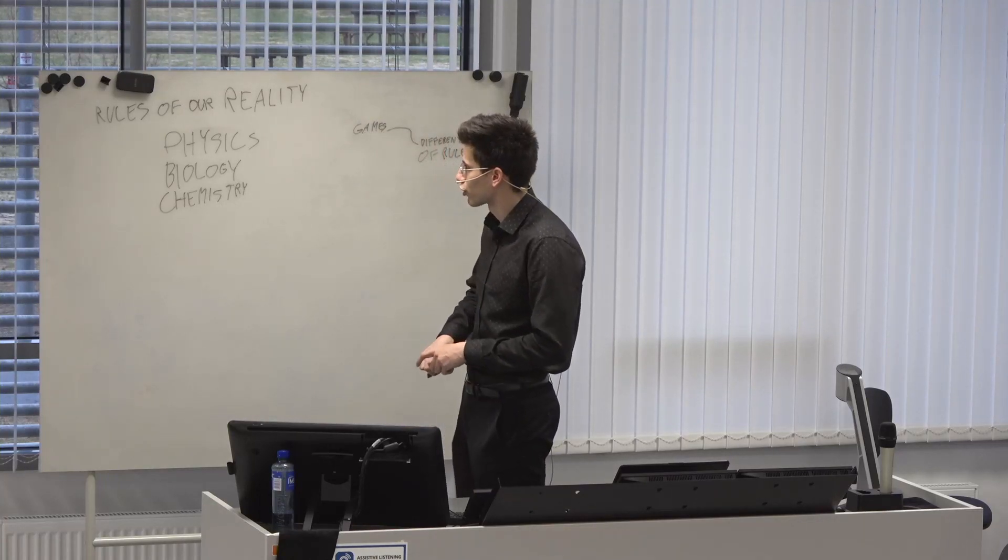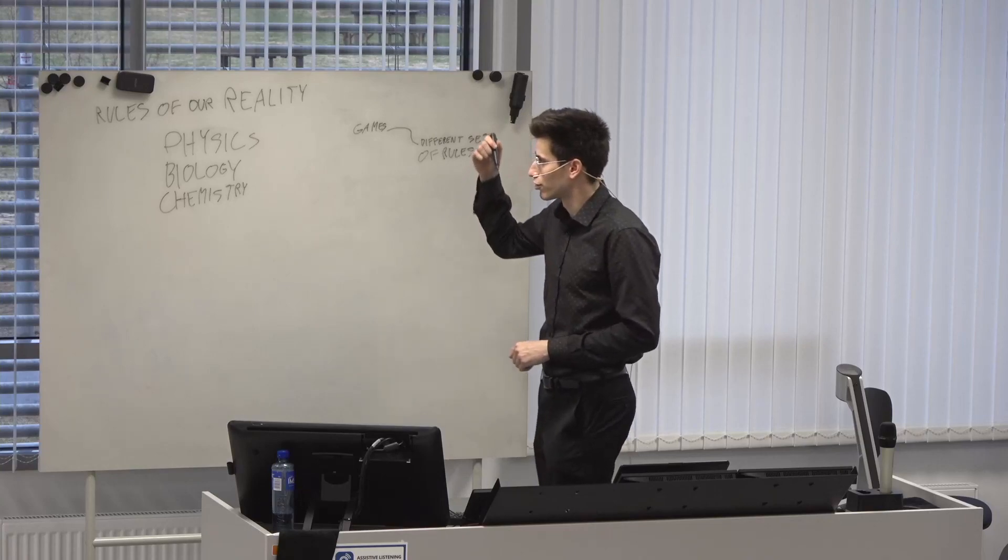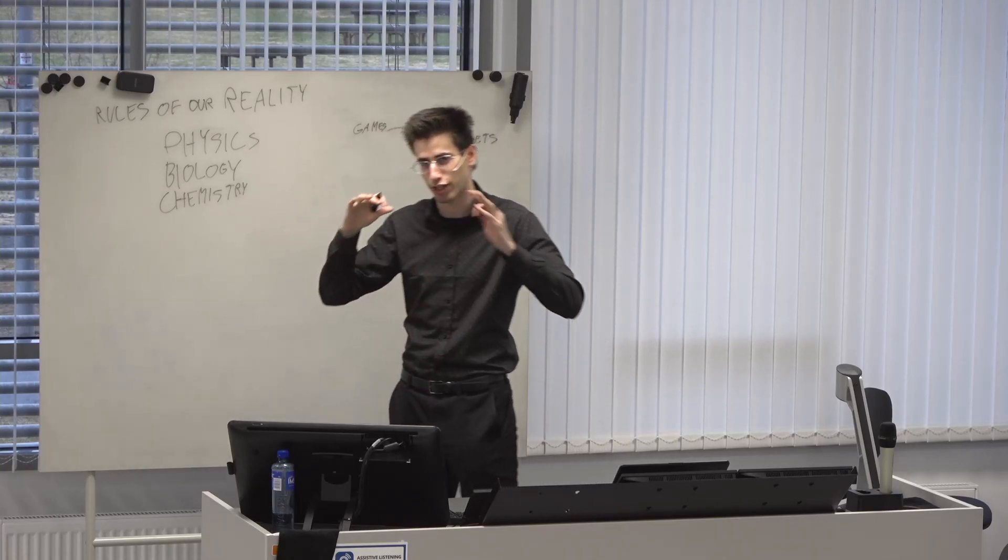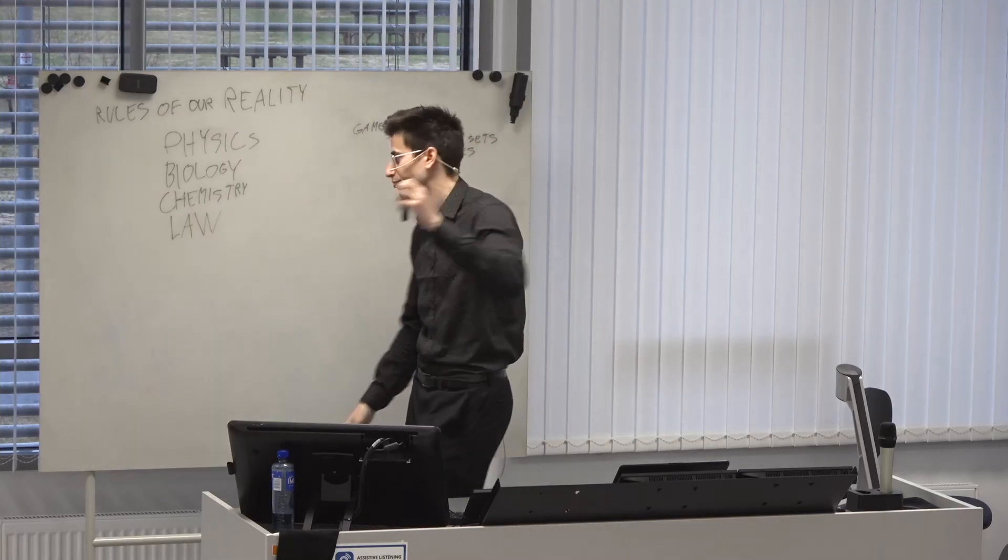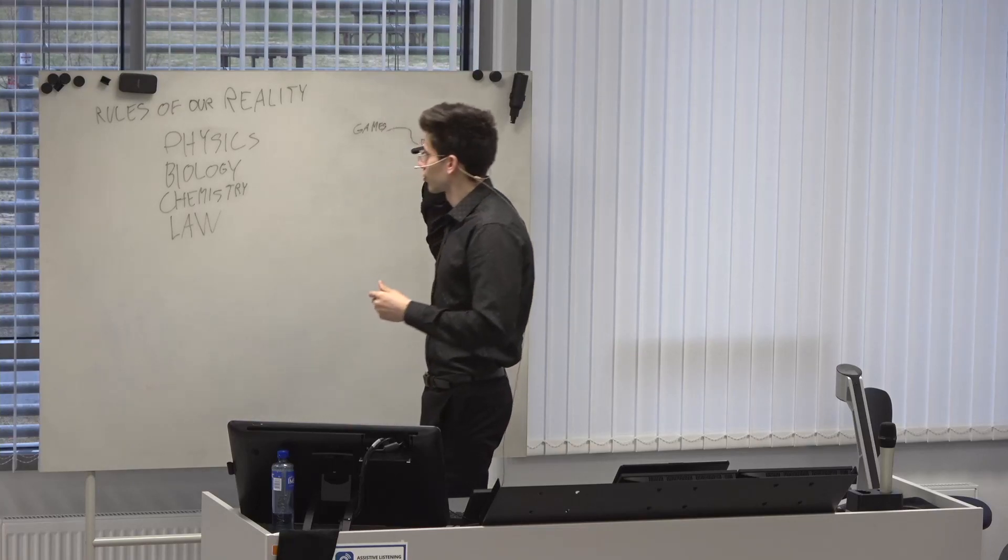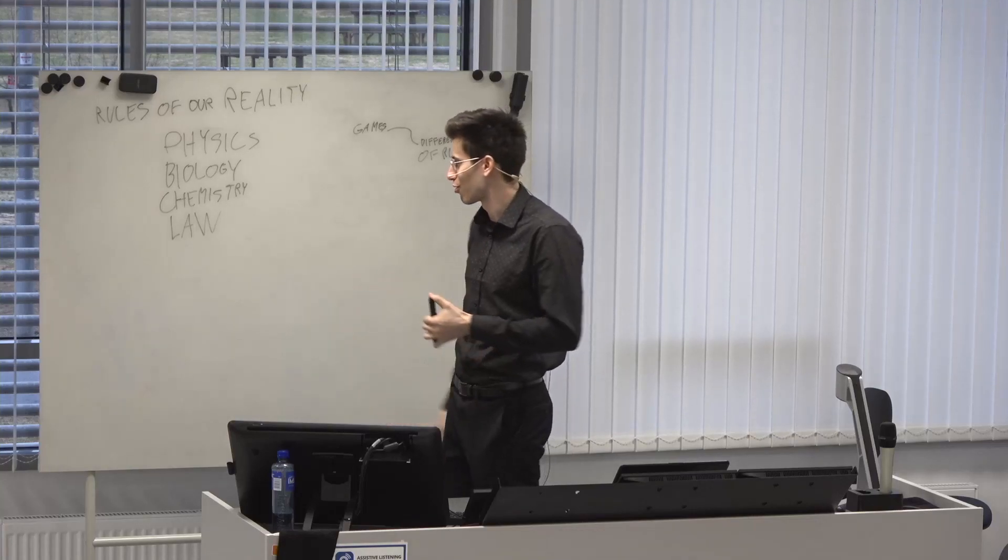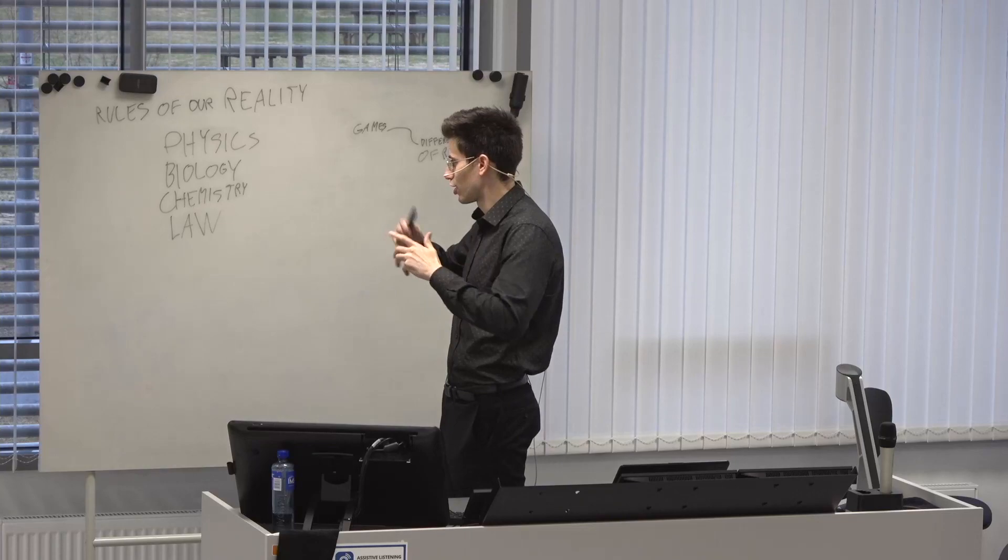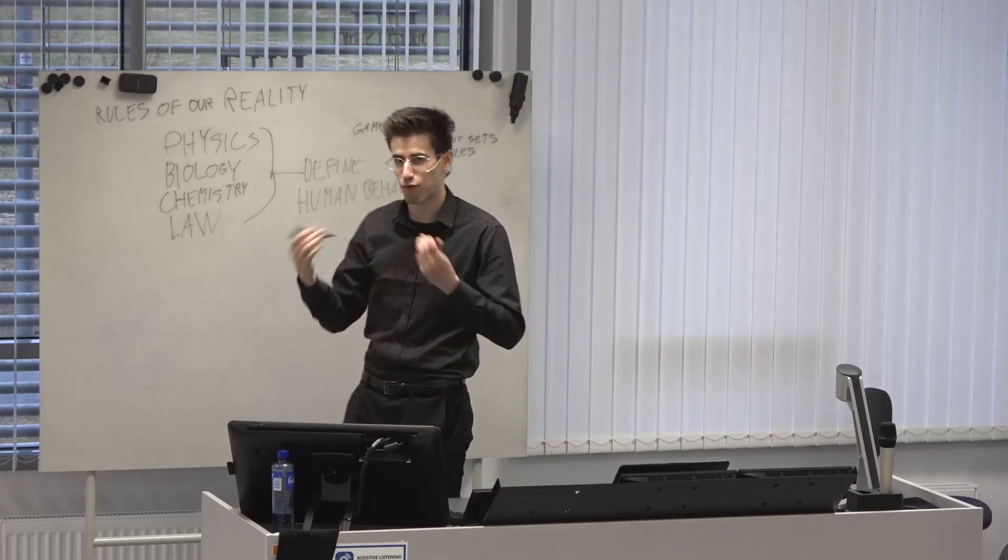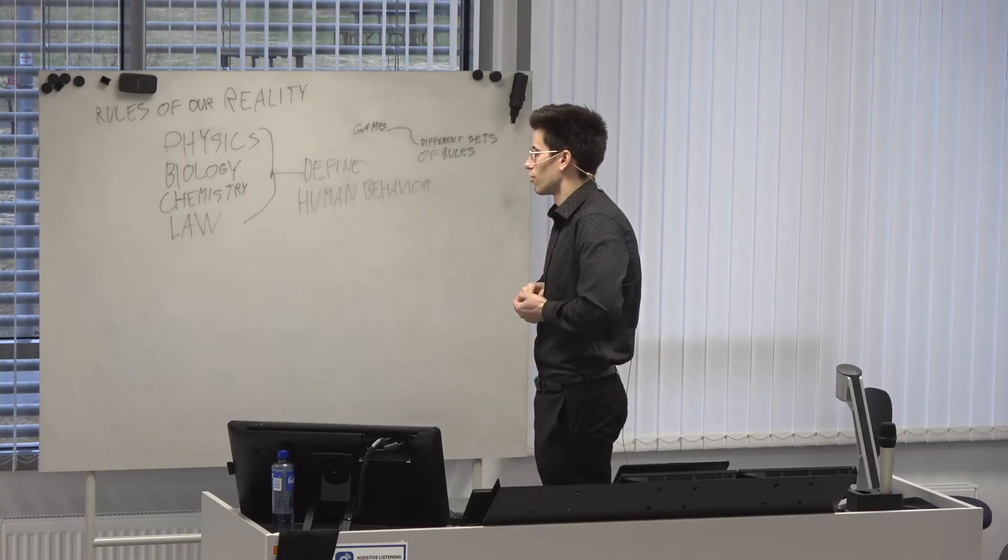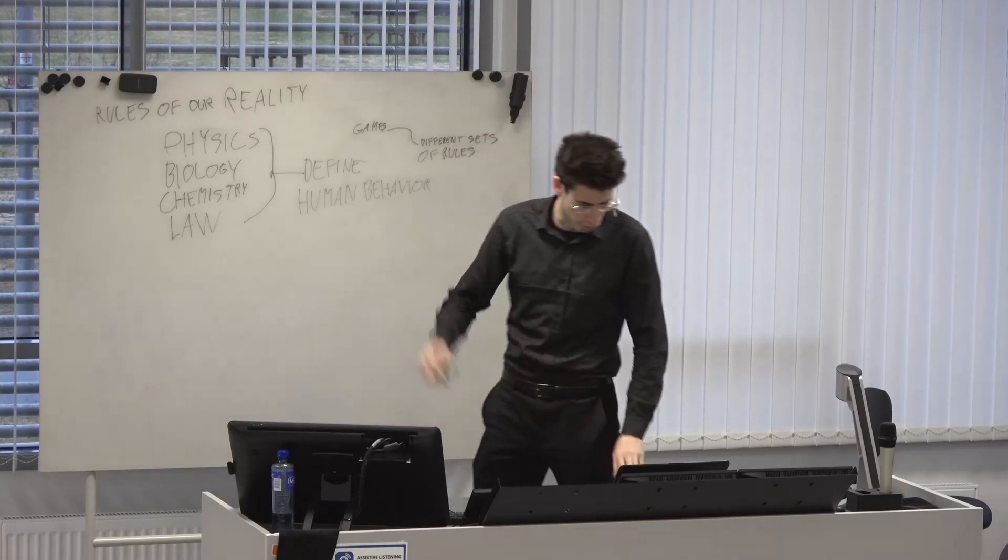Rules of our reality can be physics, biology, and chemistry. But there are also others. Rules are essentially guidelines of how our game works. Another important academic discipline that can give us rules of how our reality works would be law. It's essentially rules - you can define rules as guidelines or laws that human behavior has to follow. These are the big four that I'm able to think of right now. That's reality.